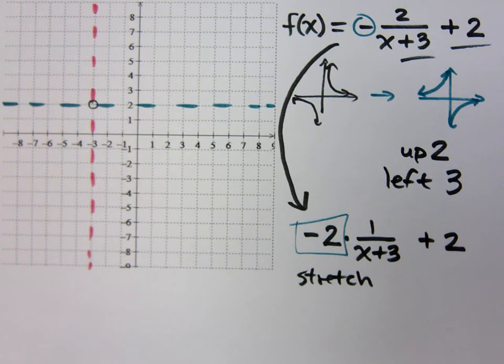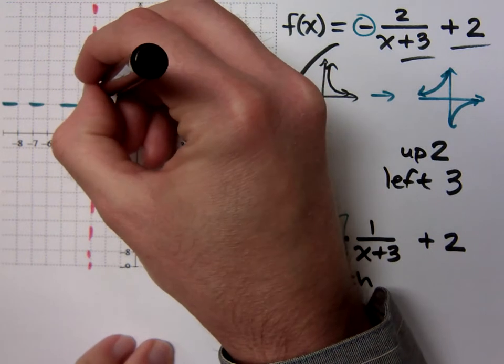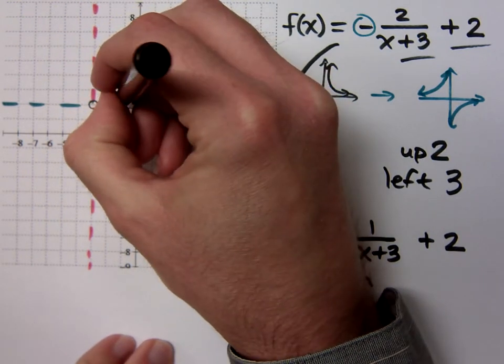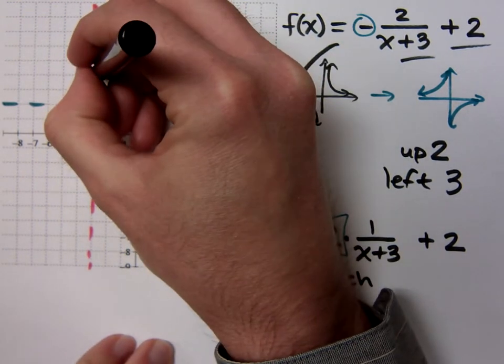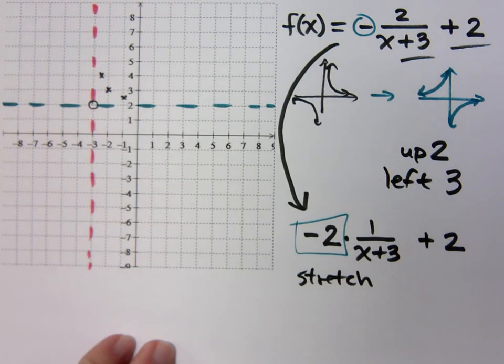So, I kind of circle this as though it's my new origin. I want you to think about where your original points were. Your original points were right here at (1, 1), (2, 1/2), and (1/2, 2), right? But, what am I doing with these guys now?